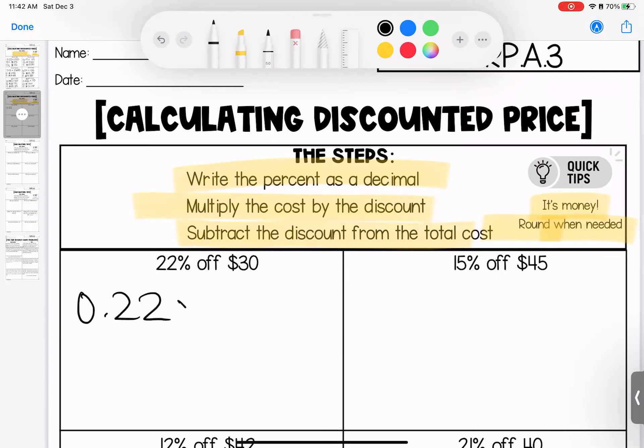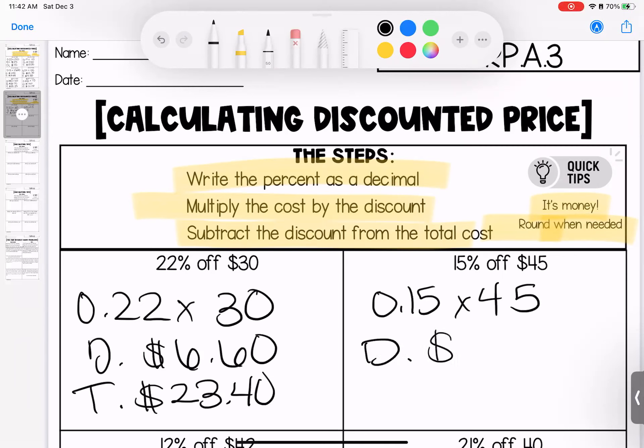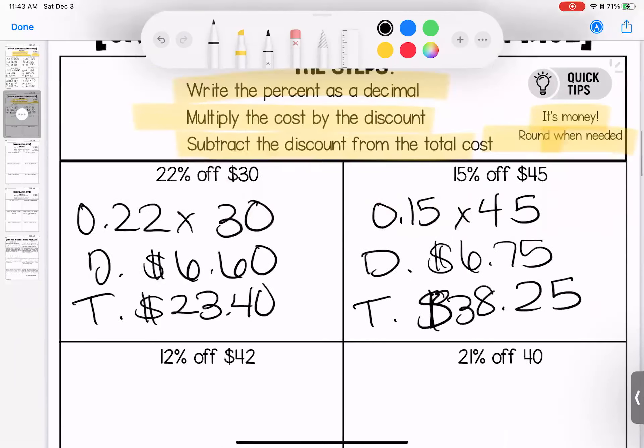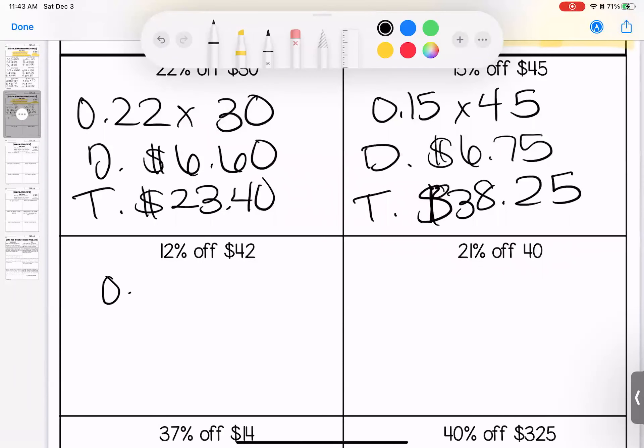22% of $30, my discount is $6.60, my total paid is $23.40. 15% of $45, my discount is $6.75, my total paid is $38.25. 12% of $42, my discount is $5.04, my total paid is $36.96.